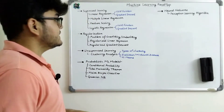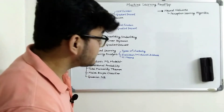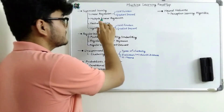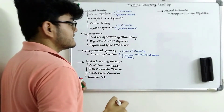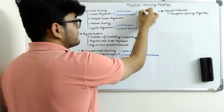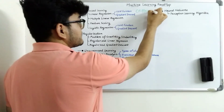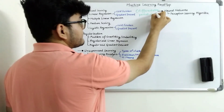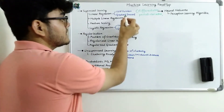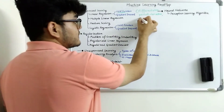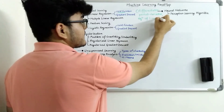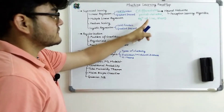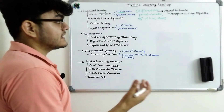In supervised learning, the first topic is linear regression. I will use a green marker to show what mathematical concept you need for each topic. For linear regression, we have the cost function and gradient descent — you will need to understand differentiation and partial derivatives to implement the cost function. You should also know the equation of a line, the significance of slope, and what an intercept is.